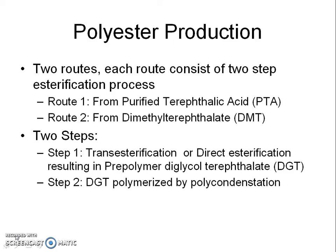Polyester production can be carried out from two routes: one using purified terephthalic acid, and second using dimethyl terephthalate. In both routes, polymerization of polyester is carried out in two steps. Step 1 is referred to as transesterification or direct esterification, in which prepolymer diglycol terephthalate is formed. In step 2, diglycol terephthalate (DGT) is polymerized by polycondensation. The second step is the same for both routes.